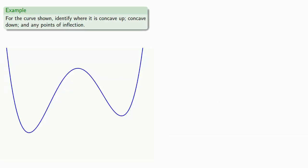For example, let's take a look at the curve shown and identify where it's concave up, concave down, and any points of inflection. Since the definition of concavity relies on whether the tangent lines are above or below the curve, we should